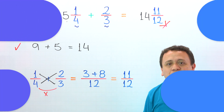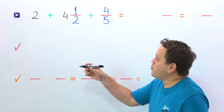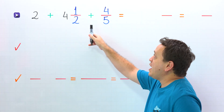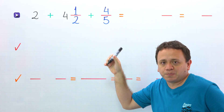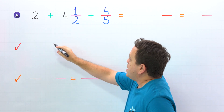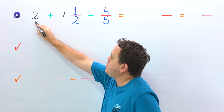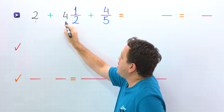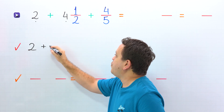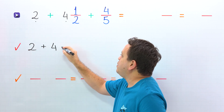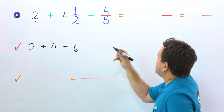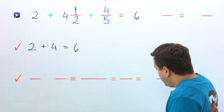Let's move on to the last example. In this problem, we need to add 2 plus 4 and 1 half plus 4 fifths. You already know the steps. First, we add the whole numbers, and the whole numbers are 2 and 4. So 2 plus 4 gives us 6. Next, we put 6 in the answer.